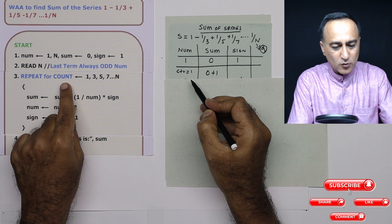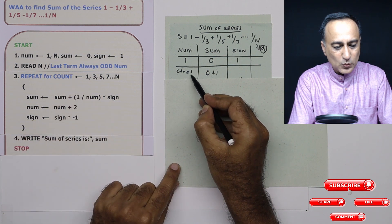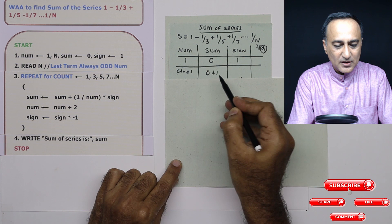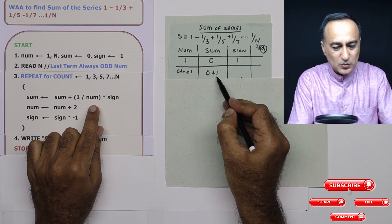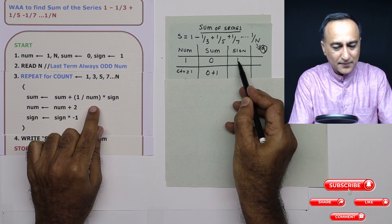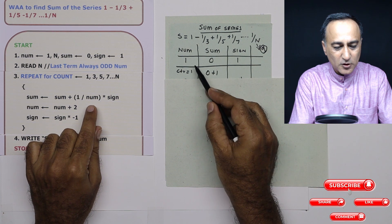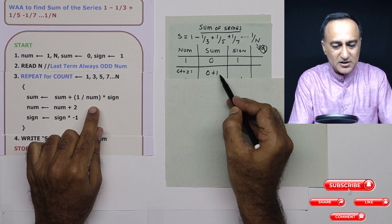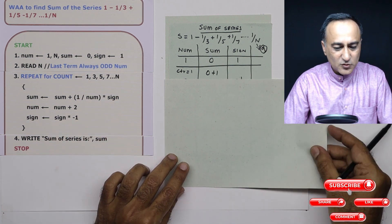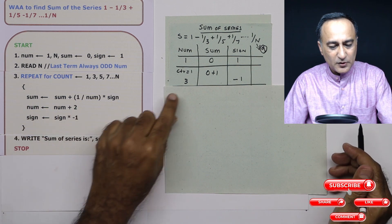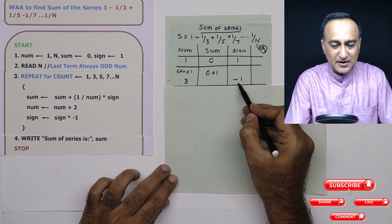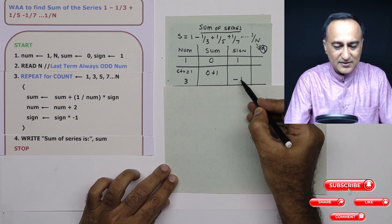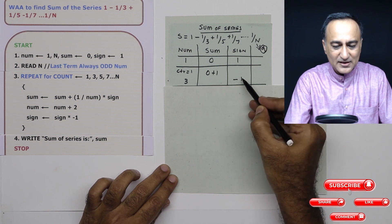The first time through, count = 1. Sum = 0 + (1/1) × 1 = 1. So sum is now 1. Then in the next two steps, number increases by two and becomes 3, and sign is multiplied by minus one, so sign becomes minus one. You need to use these updated values of number and sign for the next iteration.